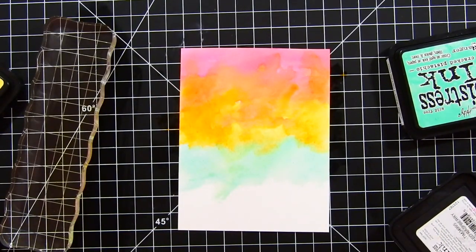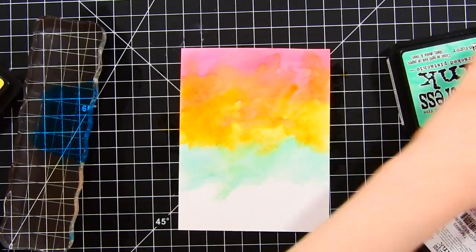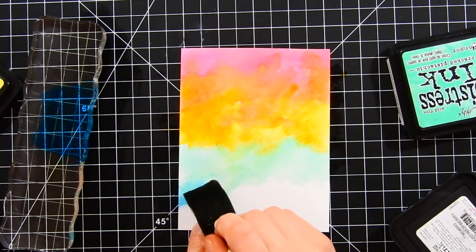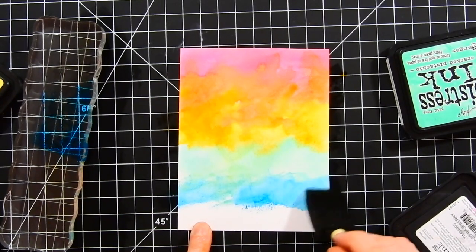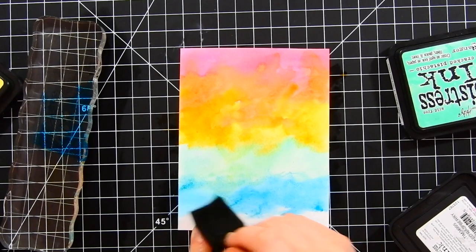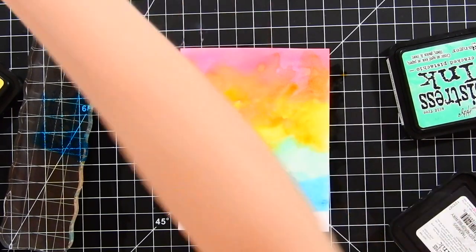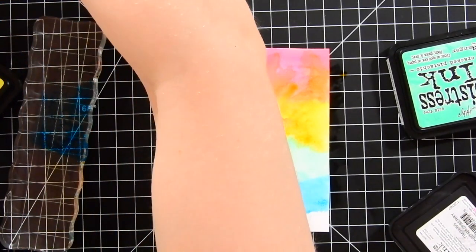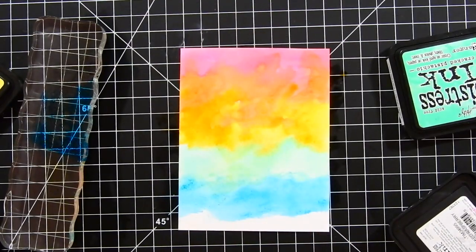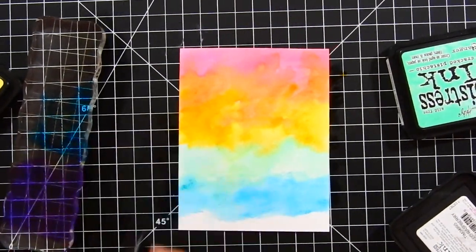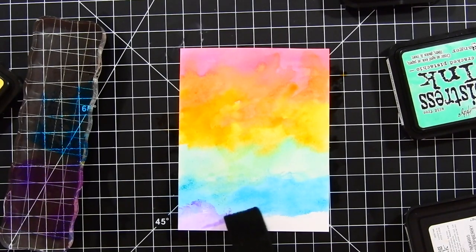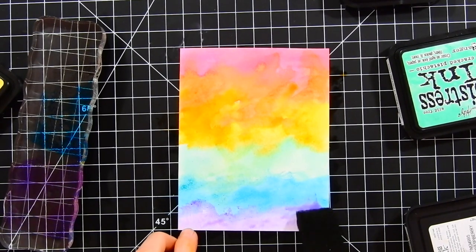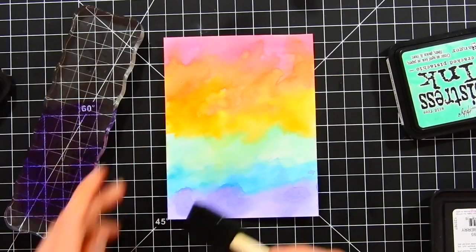I'll clean my block to get all that extra ink off and move on to the next color. For the next color, I'm using some mermaid lagoon distress ink. This is a gorgeous blue color. I really love how it mixes with the cracked pistachio. I'll blend this down, not using a whole lot of it because I want to have some purple down at the very bottom. I'll clean off my brush and now I'll take some wilted violet. This is a beautiful, bright purple color. I'll apply this down along the very bottom and mix it in with the mermaid lagoon.